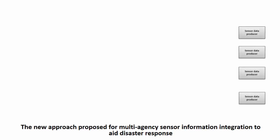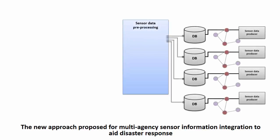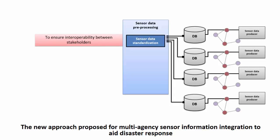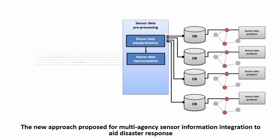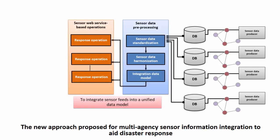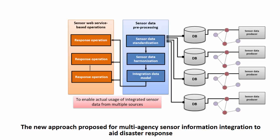To overcome these identified issues and requirements, we have developed a new framework for multi-vendor sensor information integration in support of cooperative disaster response. This framework is comprised of certain components, including sensor data standardization to enable homogeneous flow of sensor feeds between stakeholders, sensor data harmonization to automatically harvest incoming sensor feeds, an integration data model to connect incoming sensor feeds into a unified data model, and finally sensor web services to enable actual usage of integrated sensor data within emergency situations.